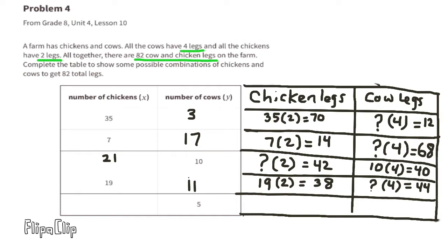And finally, if there were 5 cows: 5 times 4 equals 20, so that accounts for 20 legs. 82 minus 20 is 62. 62 divided by 2 is 31. So if there were 5 cows, there would be 31 chickens.